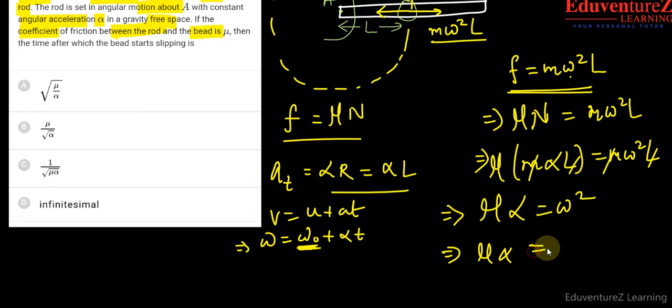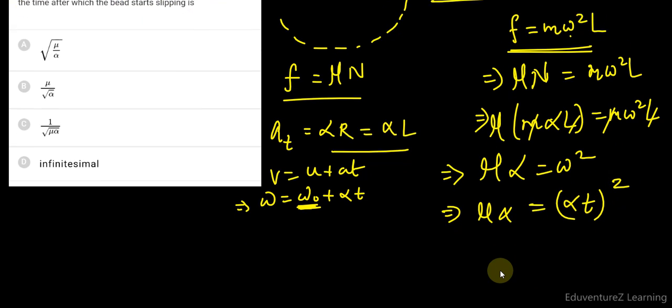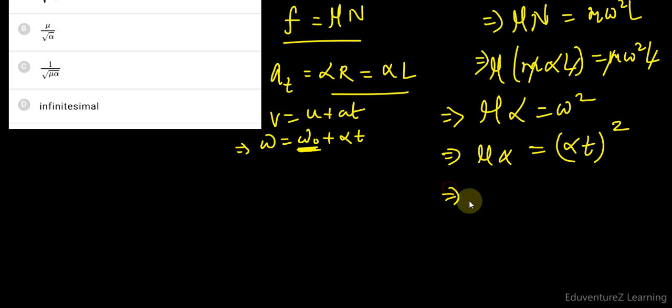Mu alpha equals alpha T whole square, and we have to calculate the time. So mu equals alpha T square. Therefore, T equals root of mu upon alpha.